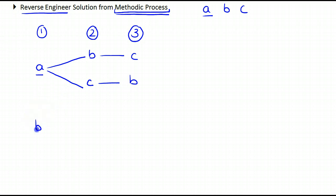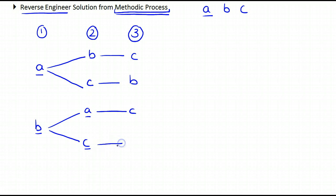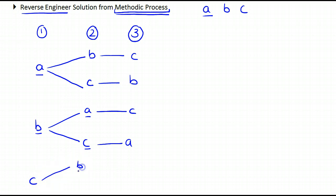Now let's move on to fixing B in the first position. We have two possibilities for the second position: either A or C. If we fix B and A, then we are left with C in the third position. If we fix B in the first position and C in the second position, then the only permutation for the third position is A. And similarly, we do the same process for C fixed in the first position.